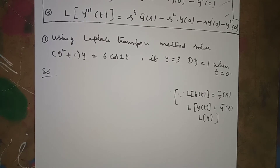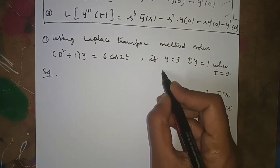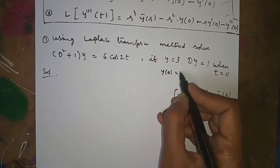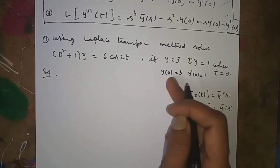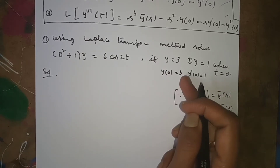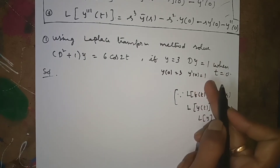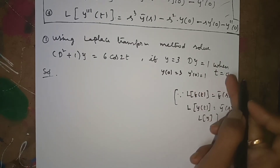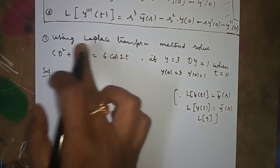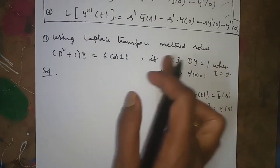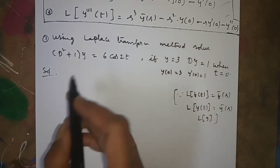So the initial conditions are: y(0) = 3 and y'(0) = 1. That is, y at t = 0 is 3, and y' at t = 0 is 1. This is the given equation and these are the initial conditions. We will solve using the Laplace transform method.